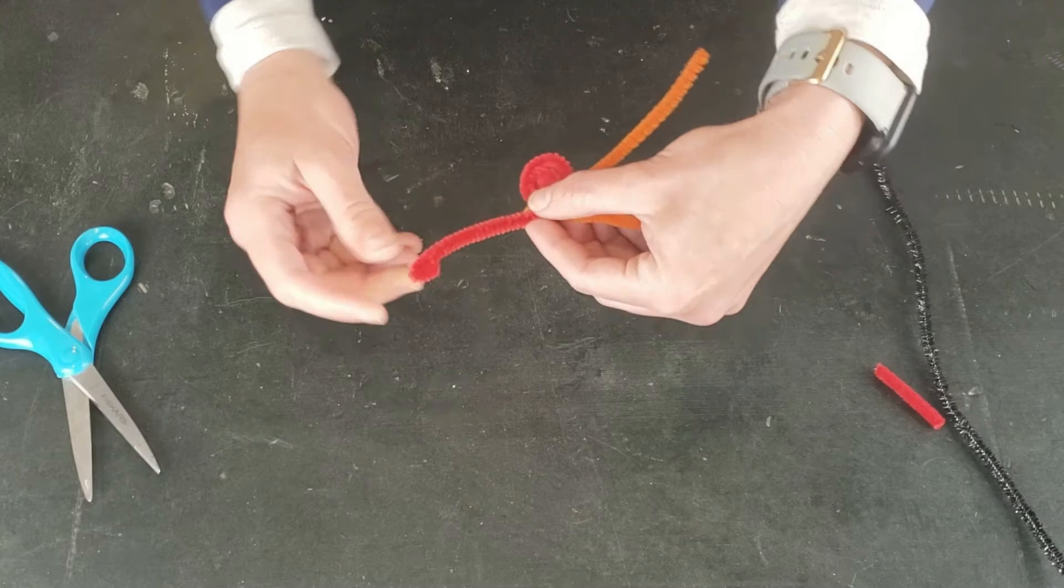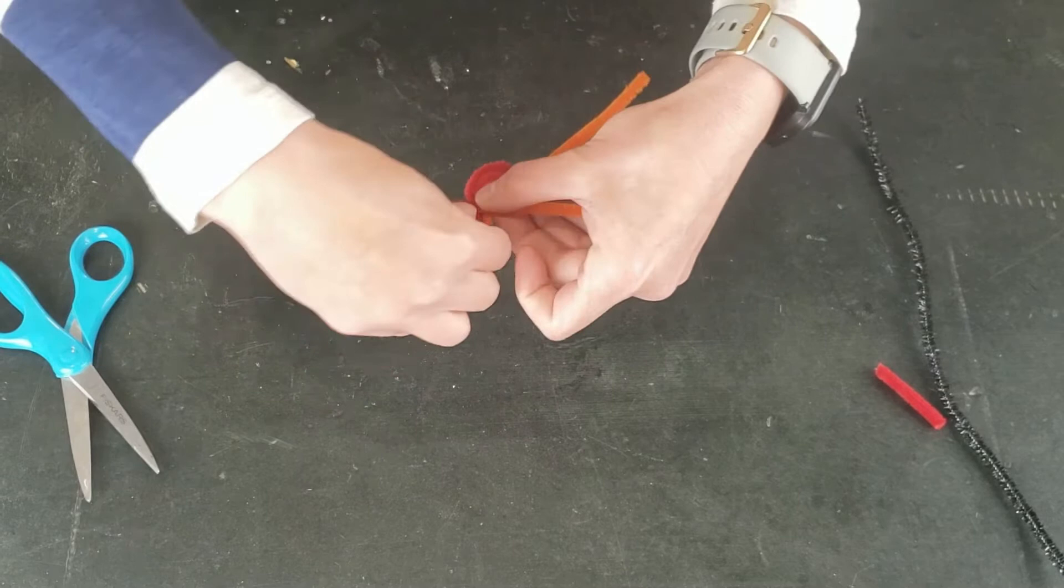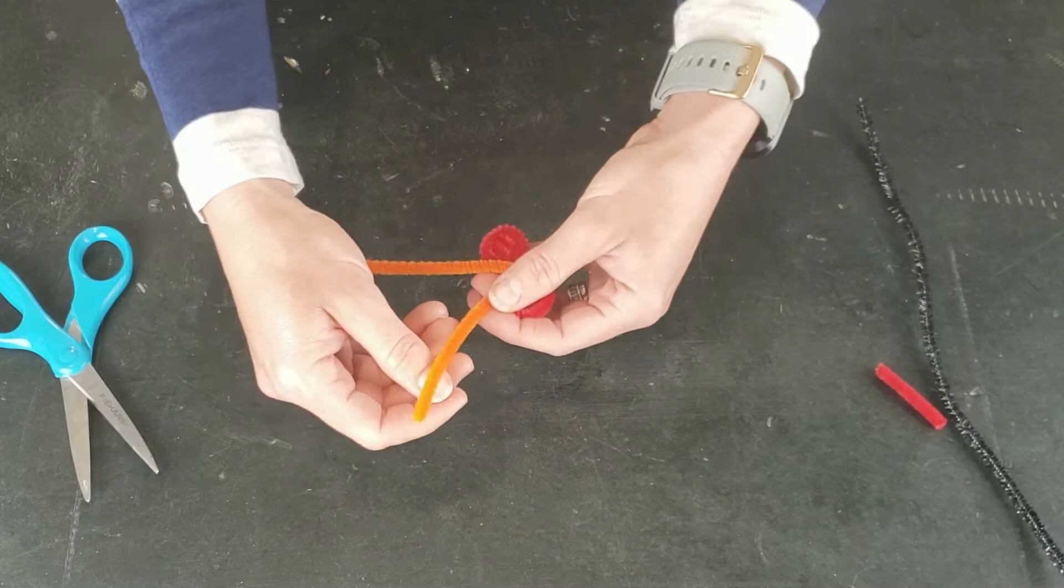And then we're going to do the same thing with the other wings, so just crimping them in on each other, pinching it between both of your fingers to make a flat spiral.